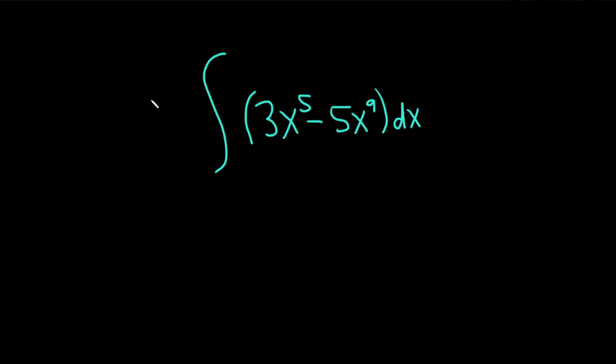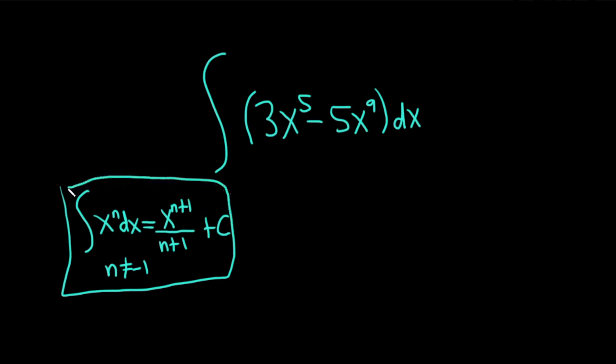There is a rule we're going to use. It's called the power rule, which says the integral of x to the n with respect to x equals x to the n plus 1 over n plus 1 plus our constant of integration, capital C. This formula is valid as long as n is not equal to negative 1. This is called the power rule for integration.